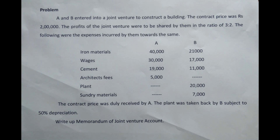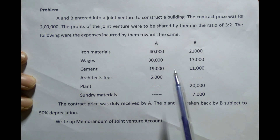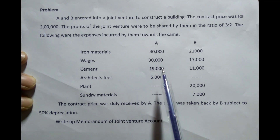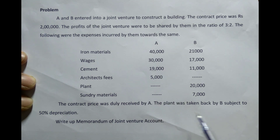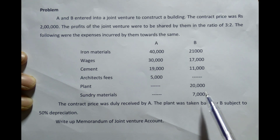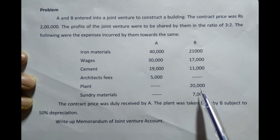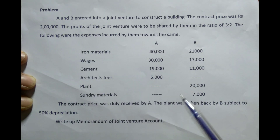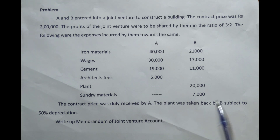In this problem, both of the co-venturers have incurred items required for this particular construction business. B has provided plant, and we have to charge depreciation of 50% on the value of Rs. 20,000. The contract price of Rs. 2 lakh was received by A. Based on this information, let us prepare the memorandum joint venture account.